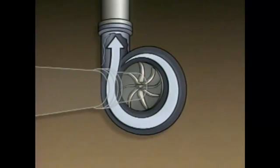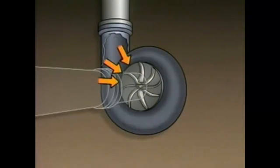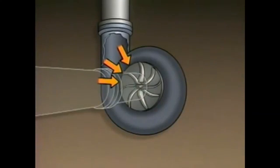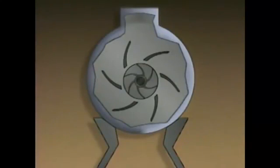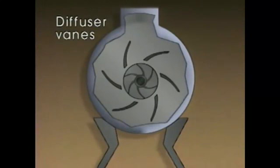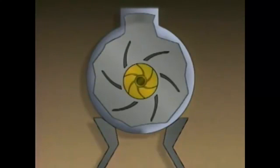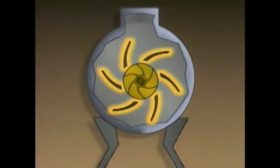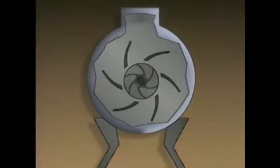In a compressor with a volute, the gas in the volute creates a force called radial thrust, which tends to push against the impeller. Radial thrust is created by the difference in pressure that the volute creates from one side of the impeller to the other. Some centrifugal compressors are designed to minimize radial thrust by using a series of plates or vanes called diffuser vanes. In this type of compressor, the impeller is surrounded by the stationary diffuser vanes. The distance between the outer tips of the vanes is greater than the distance between the inner tips, and the vanes create a series of small volutes all around the impeller.